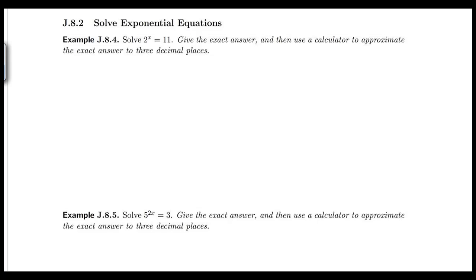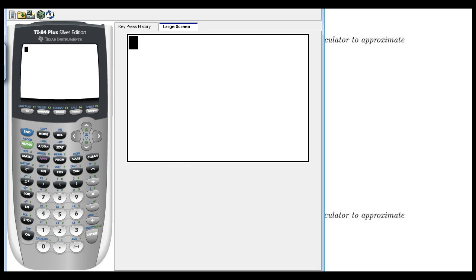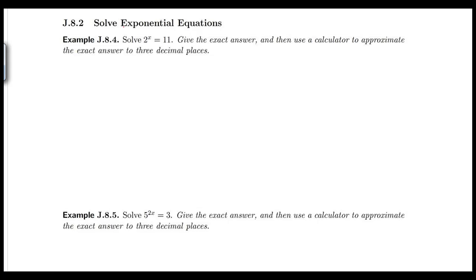In part 2 of solving with logarithmic and exponential equations, we're going to concentrate on solving with just exponential equations. The directions for your homework problems are to give the exact answer and then use a calculator to approximate the exact answer to three decimal places. You'll need your scientific or graphing calculator, which has the log or natural log button, because sometimes you'll have to use the change of base formula. The first example states 2 to the x equals 11.